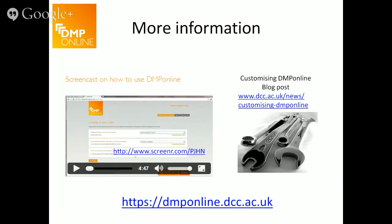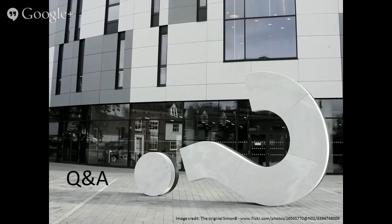To find out more, we have a screencast that shows how to use DMP Online, and a blog post on how to customize the tool specifically that walks you through the different options and has a spreadsheet you can fill in to provide your template. You can provide that in any format — if you already have a PDF with a draft template, we can work from that too. There's also a link to the tool. By all means, go and have a play around and let us know what you think. So that's all I wanted to say on customizing the tool. We have about half an hour left, so please ask any questions.